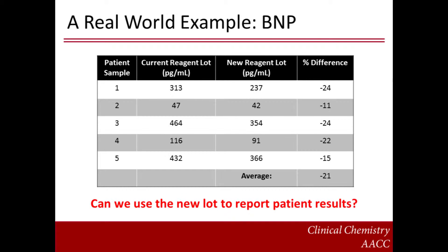I'd like to begin this pearl with a real-world example. BNP is a small peptide hormone that is used in the diagnosis of congestive heart failure. One of my laboratories received a new lot of reagent for this assay and decided to further evaluate it after noticing a large shift in the quality control results. The table here shows the results obtained for five patient samples using the current reagent lot and the new reagent lot. As you can see, the differences are quite striking. Should the laboratory accept the new lot and use it for patient testing?